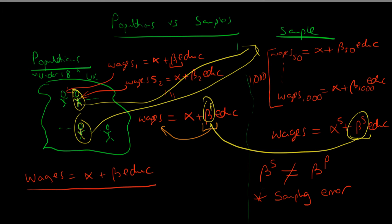We call the reason behind this difference between the sample parameter and the population parameter sampling error. This means that as a result of taking a sample from the population — which by definition is a subset of the population — the characteristics we observe in that subset are going to be different from those of the population. So the parameter we estimate from the sample, the average effect of one year of education on wages, is going to be slightly different from that which we observe in the population.